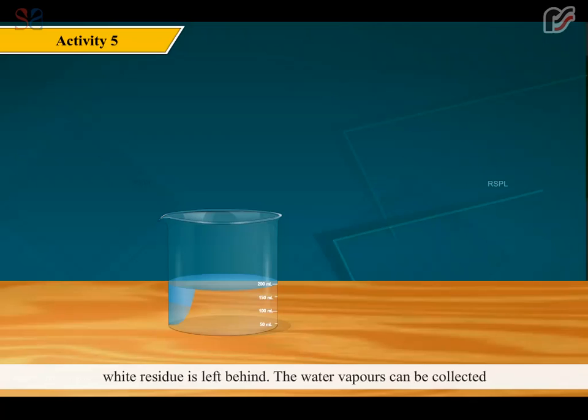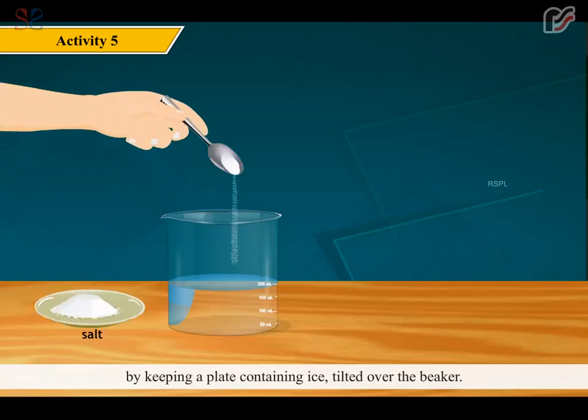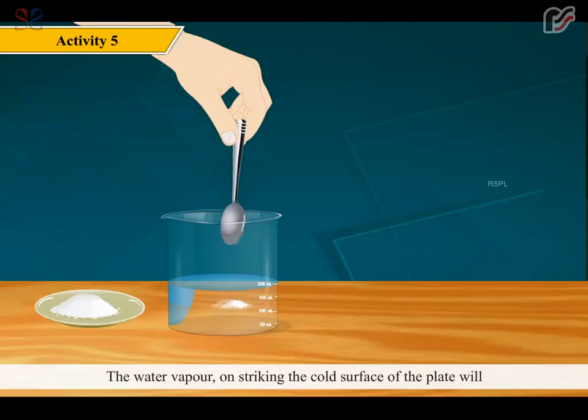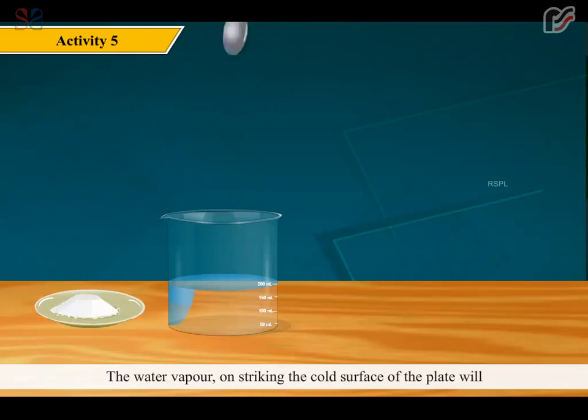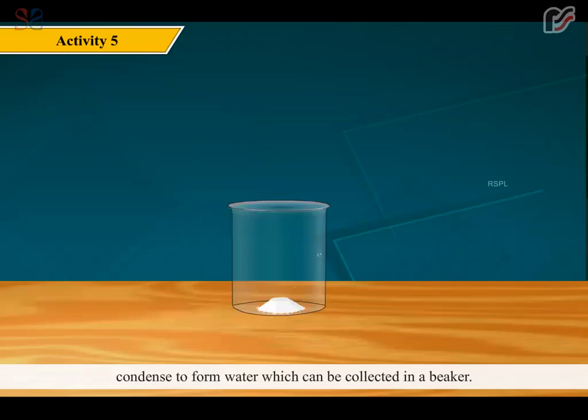The water vapors can be collected by keeping a plate containing ice tilted over the beaker. The water vapor on striking the cold surface of the plate will condense to form water, which can be collected in a beaker. When you taste this white substance, you will find that it is salt.